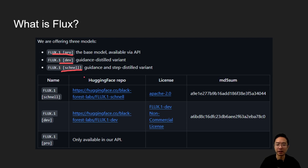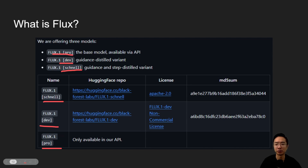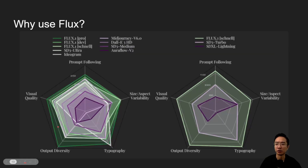The models differ based on their license type. The Schnell model is the free one which you can run locally. The Pro is accessed through their API and requires payment. The Dev is the non-commercial one, which sits somewhere in between the two.